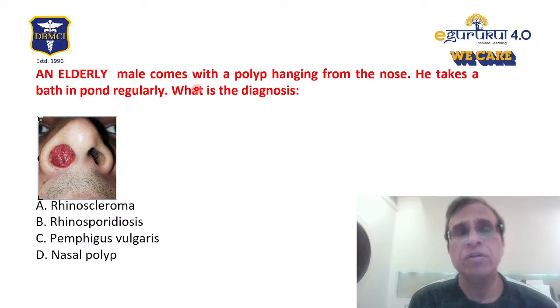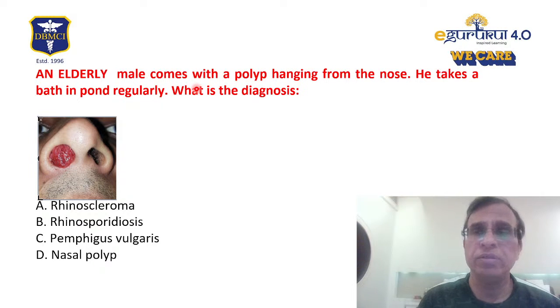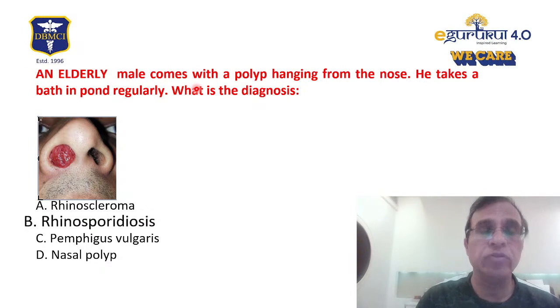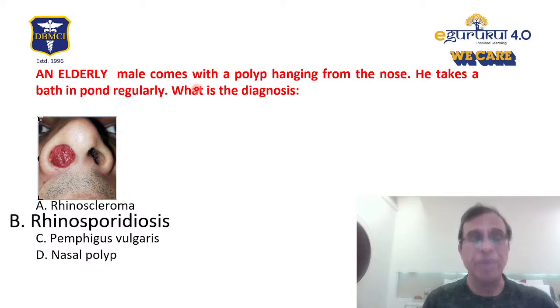A very common pathogen that grows in water causing nasal disease and mass is Rhinosporidium seeberi. Rhinosporidium seeberi is called aquatic protozoa and causes a disease called rhinosporidiosis, which is B. So B is the correct answer, caused by Rhinosporidium seeberi.